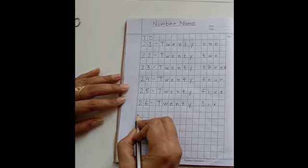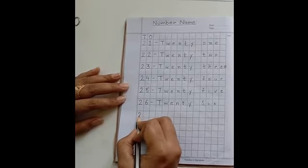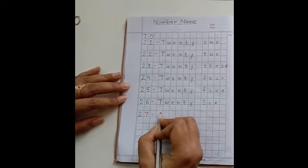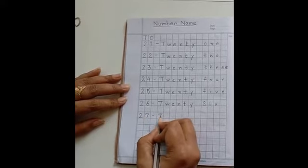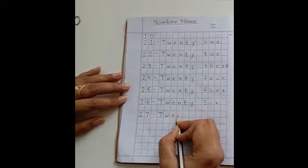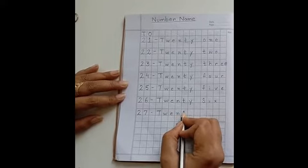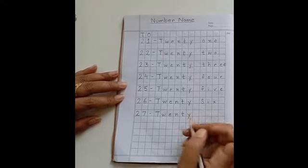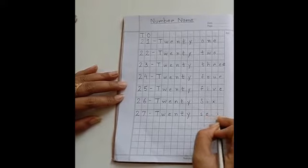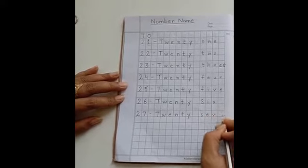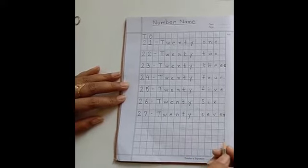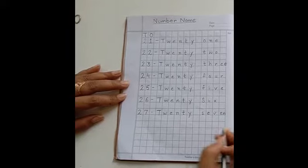Now the next number is 27. T-W-E-N-T-Y, 20, S-E-V-E-N, 7. 27.